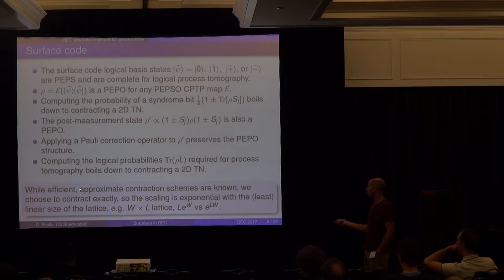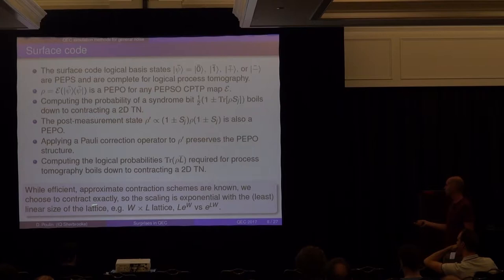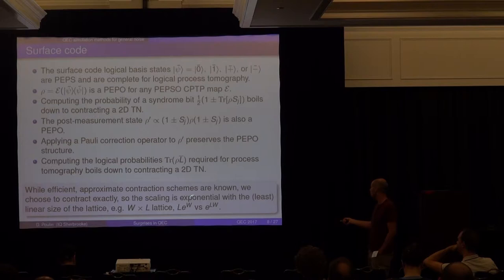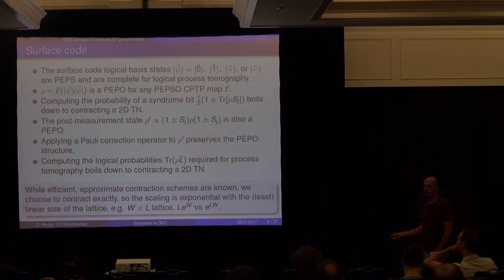The two computationally hard steps — computing syndrome probabilities and logical operator expectation values — both reduce to contracting 2D tensor networks. Efficient approximate polynomial contraction algorithms exist, but in this work we choose to do contractions exactly, so there are no simulation errors. The cost is exponential in the width but linear in the length for a W by L lattice, as opposed to exponential in the area for brute force. This allows us to simulate lattices up to 15 by 15.